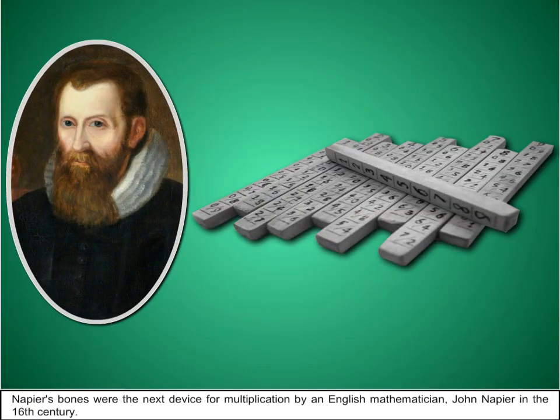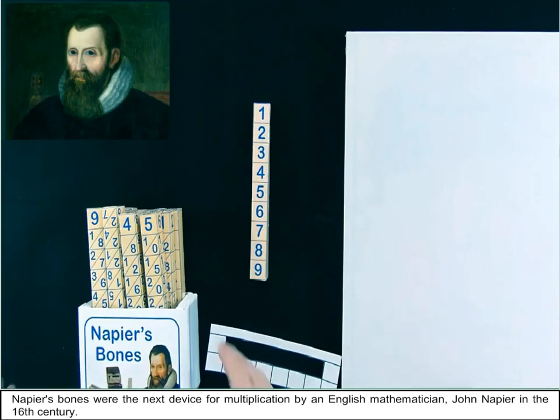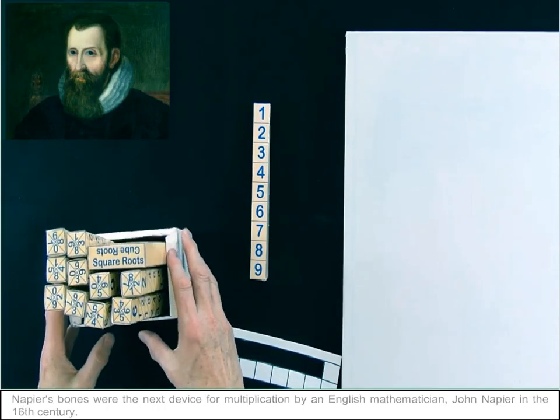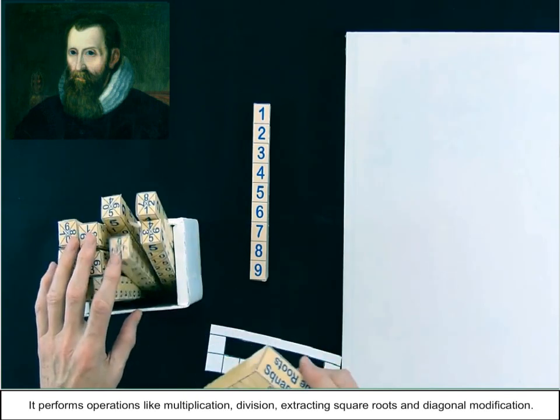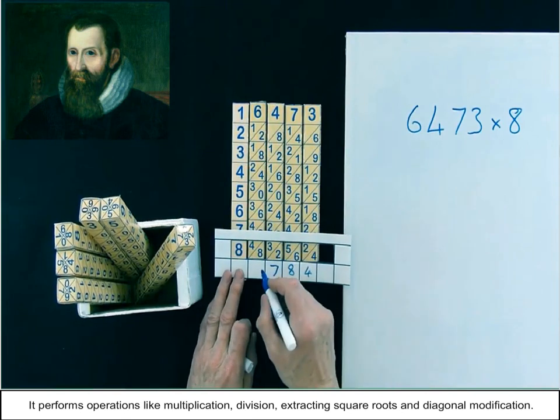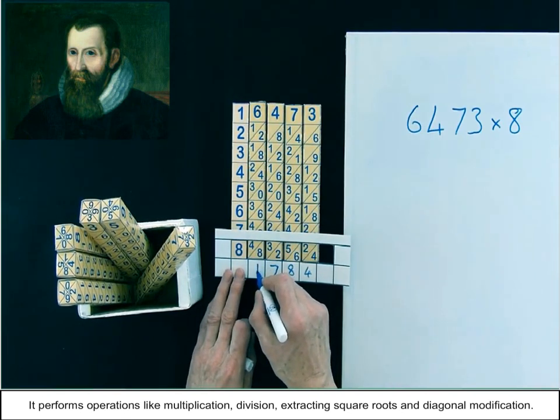Napier's bones were the next device for multiplication by an English mathematician, John Napier, in the 16th century. It performs operations like multiplication, division, extracting square roots and diagonal modification.